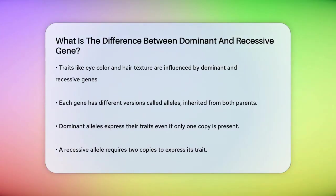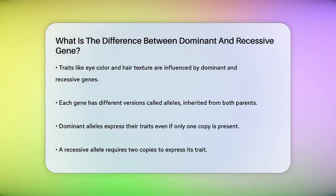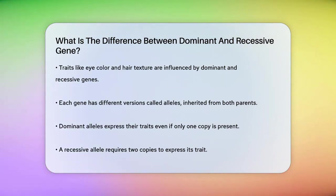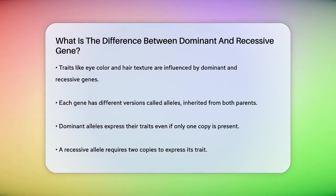Let's start with the basics. Each gene has different versions, known as alleles. When you inherit genes from your parents, you get two copies of each gene, one from each parent. These alleles can be either dominant or recessive.